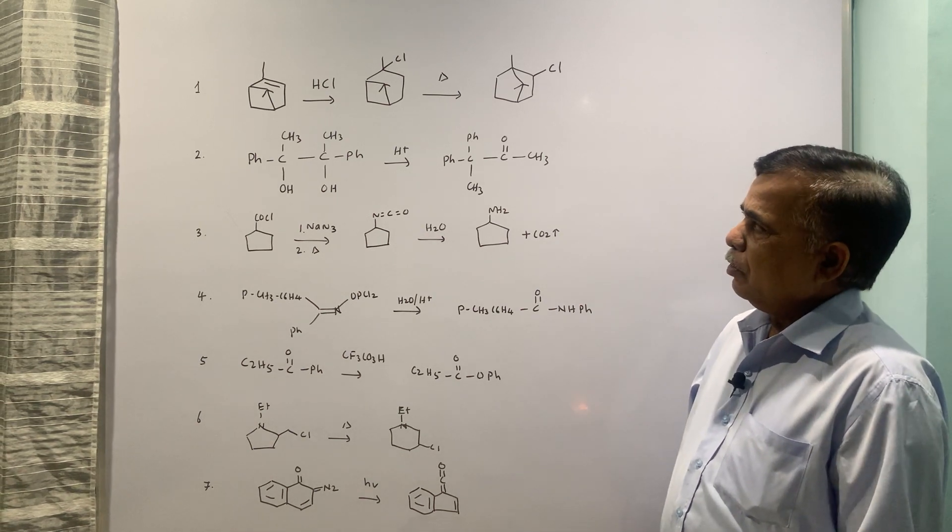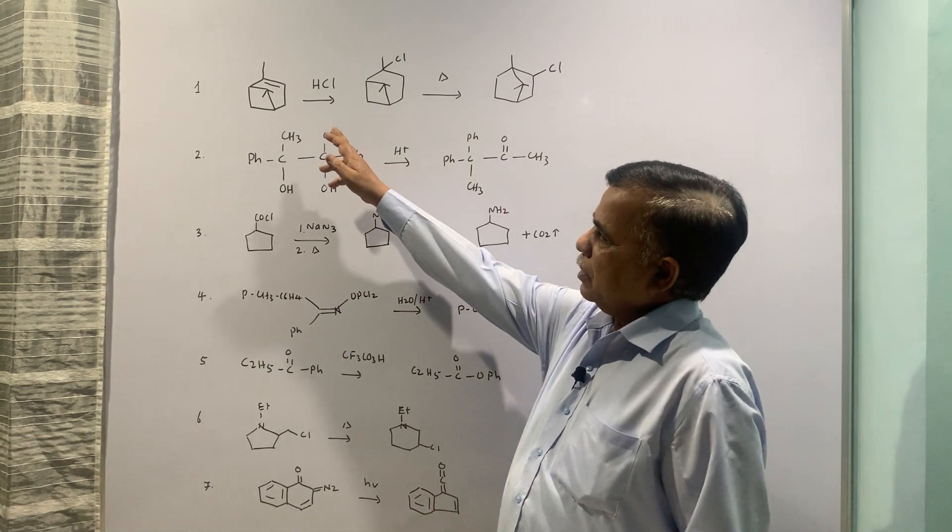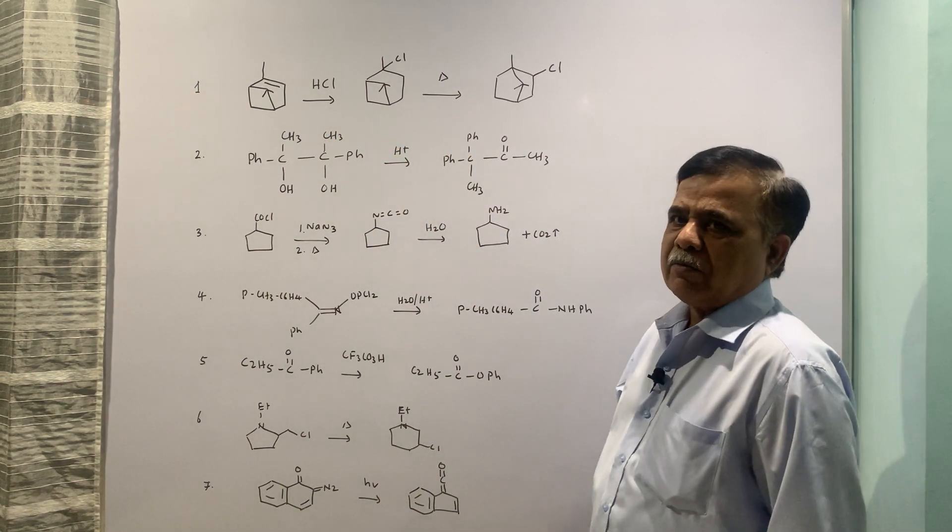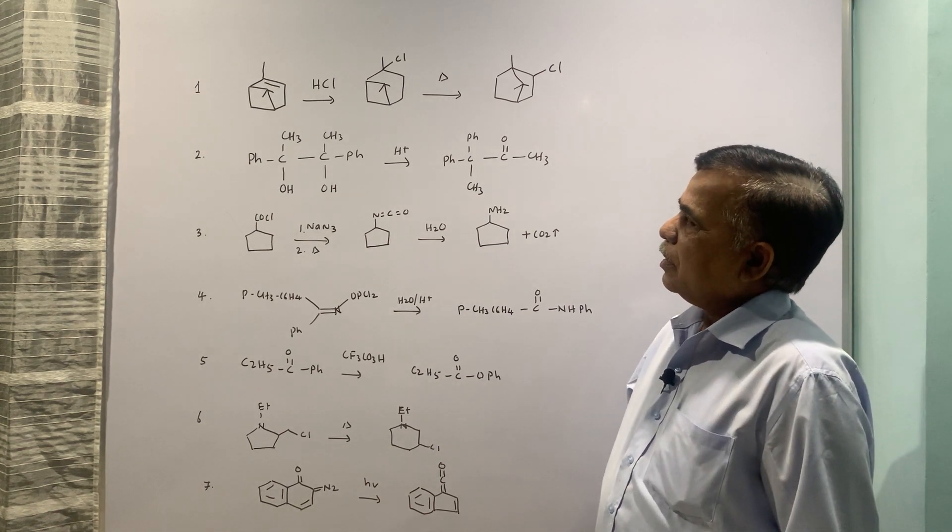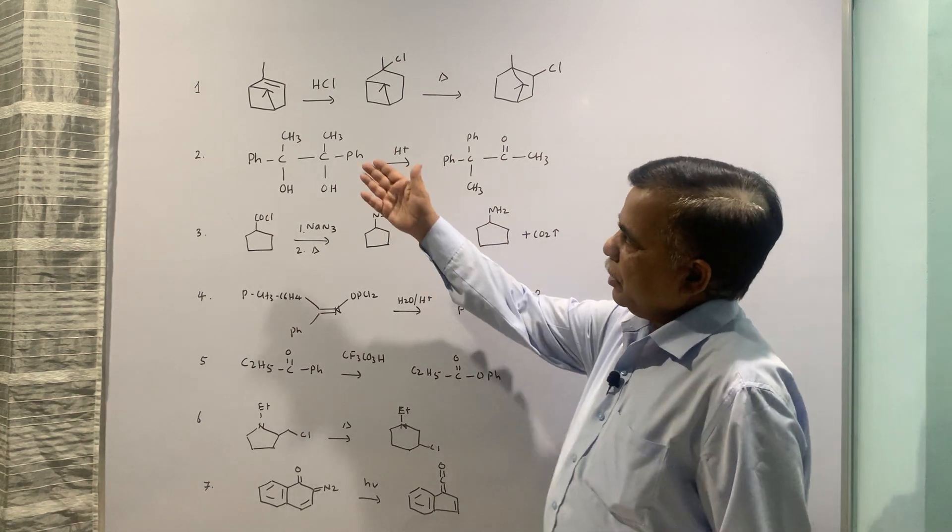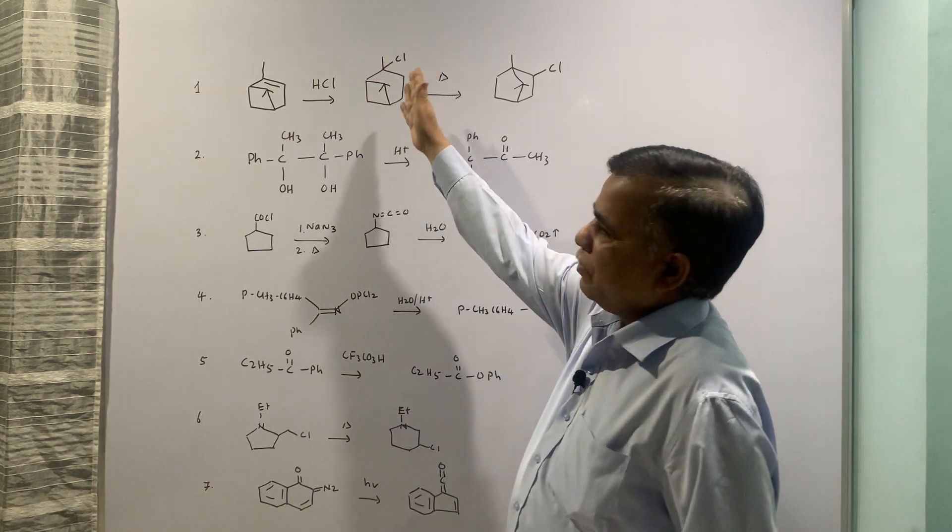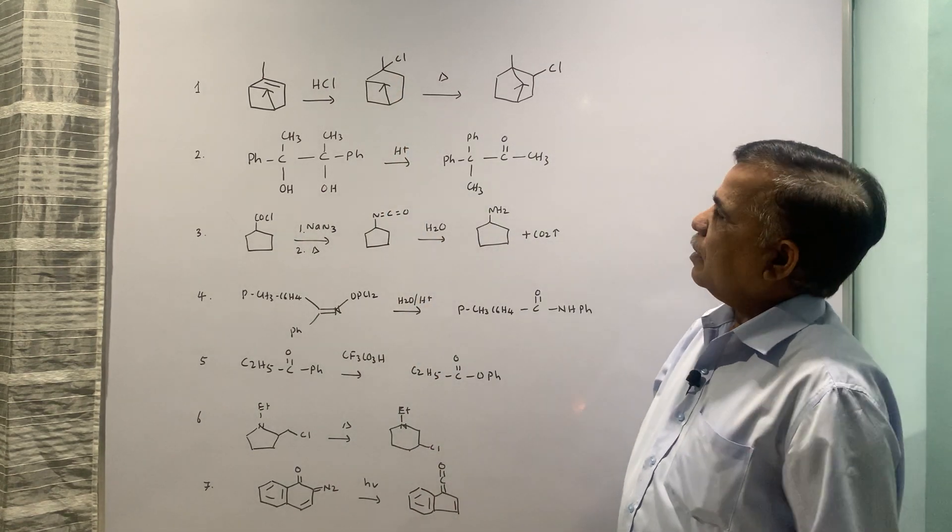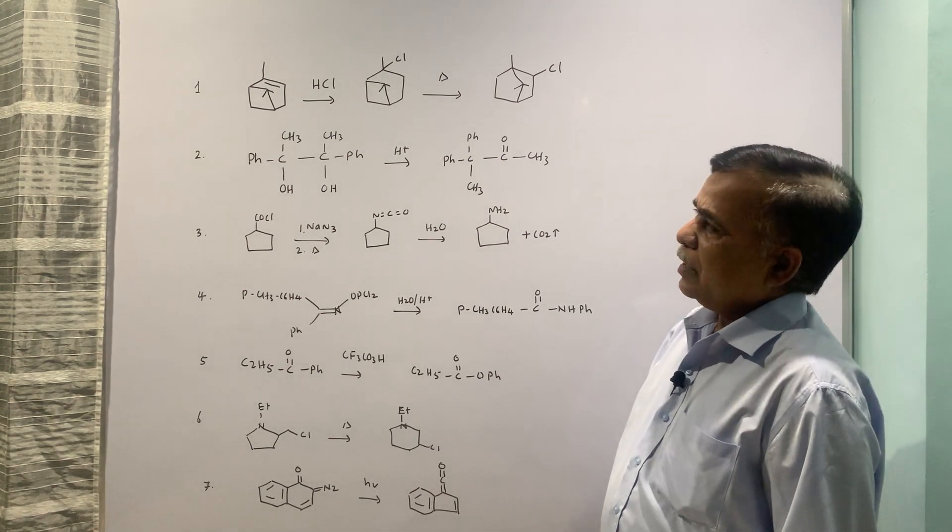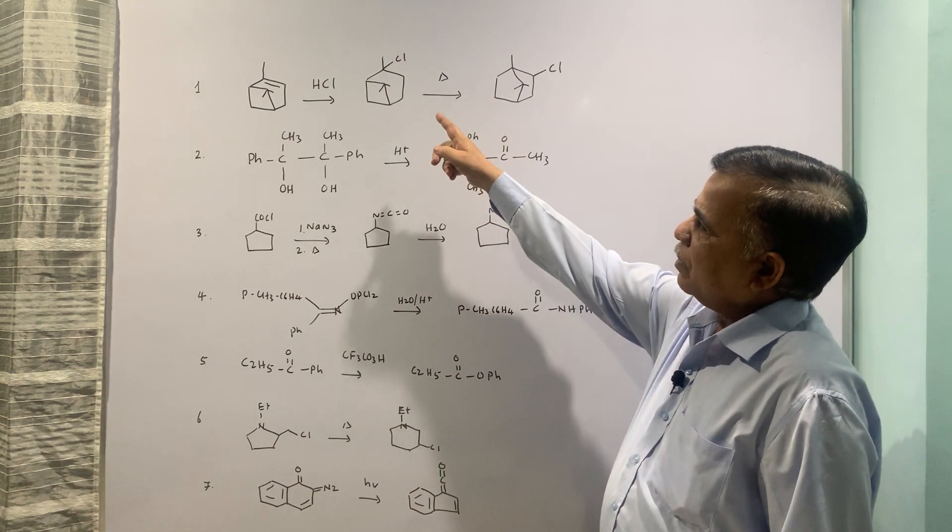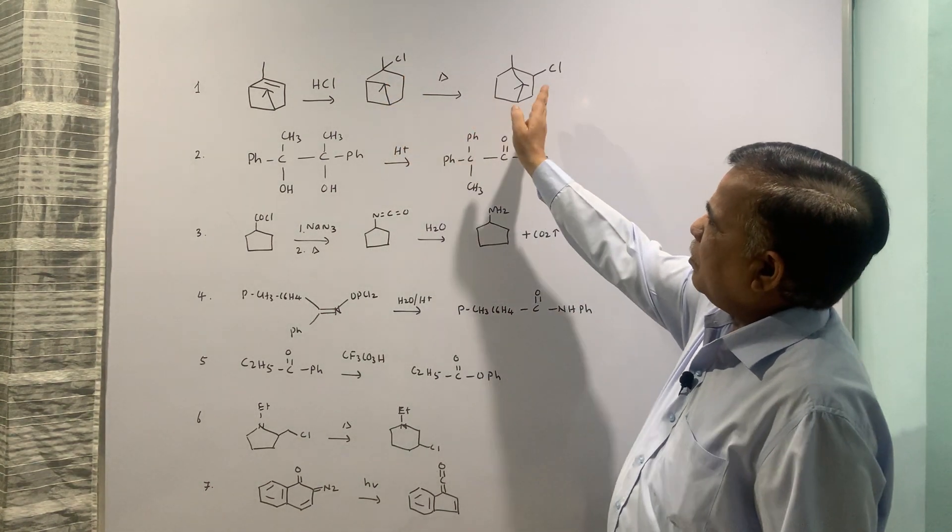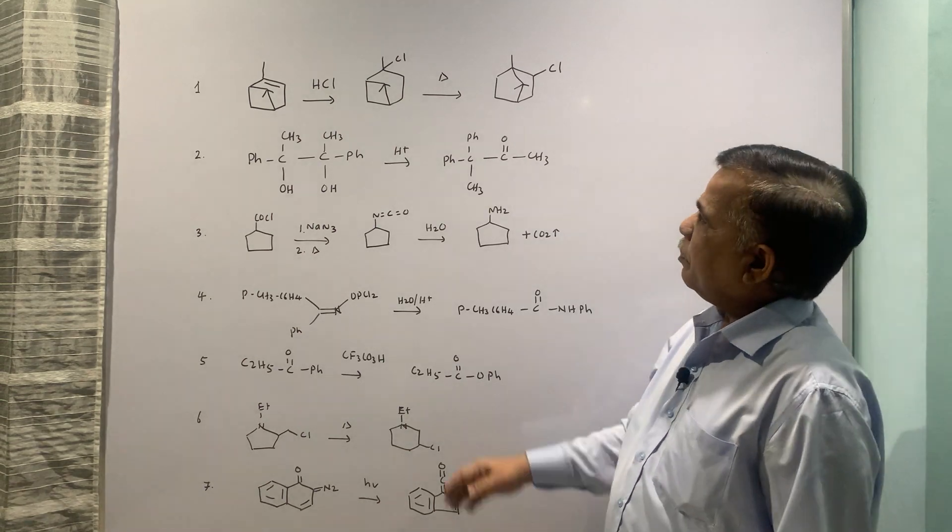The first example is when alpha-pinene is treated with HCl, you get this more substituted chloride. That is because of the Markovnikov addition, because you tend to get more substituted carbonium ion which is being attacked by Cl-. Second transformation is heat where Cl goes off.